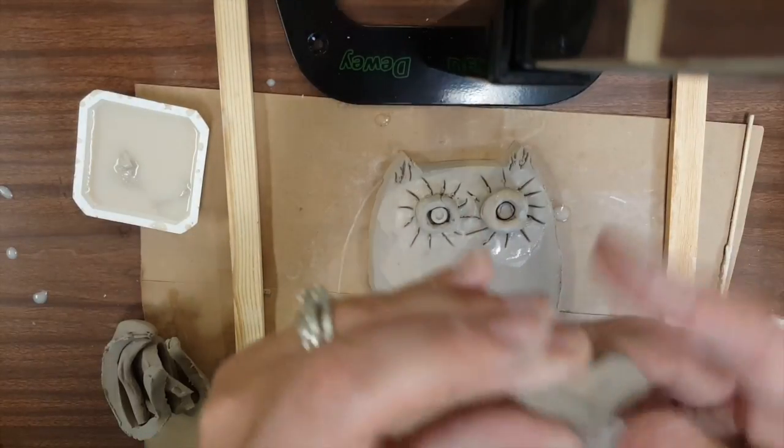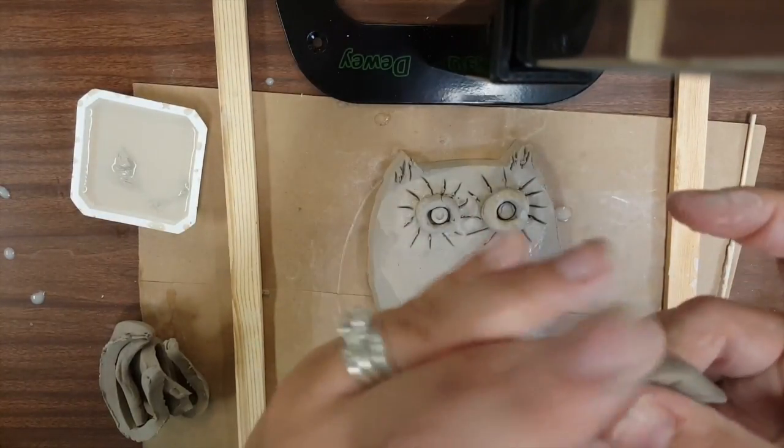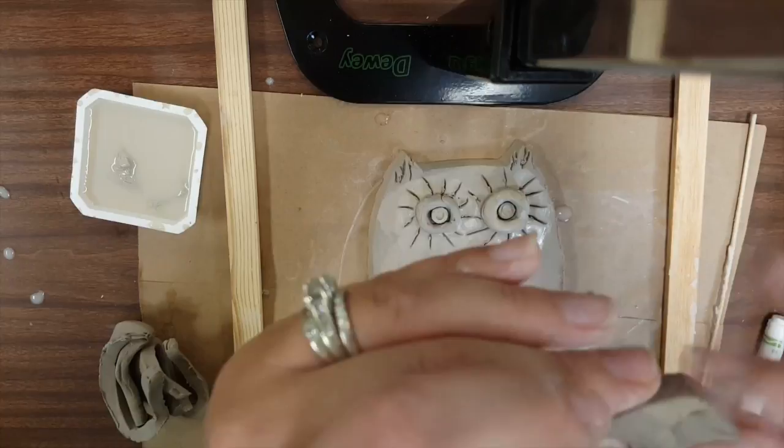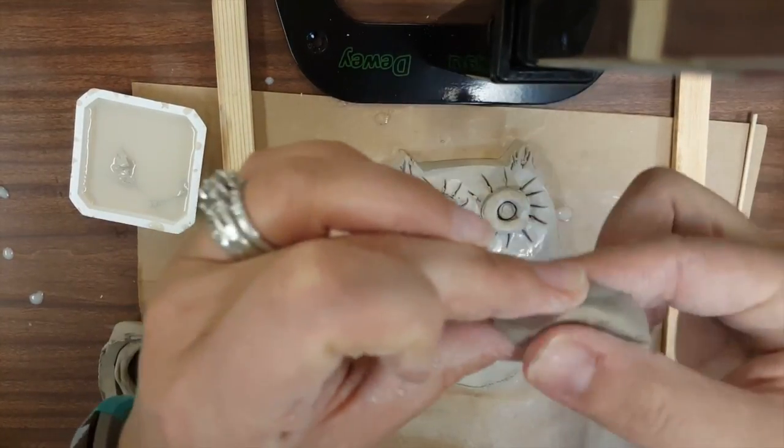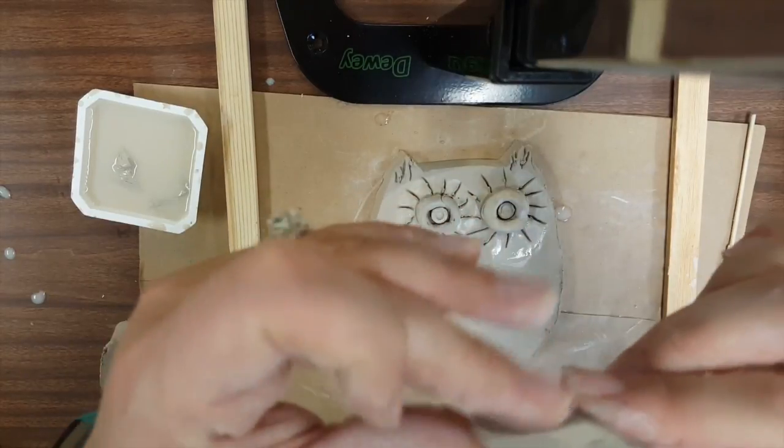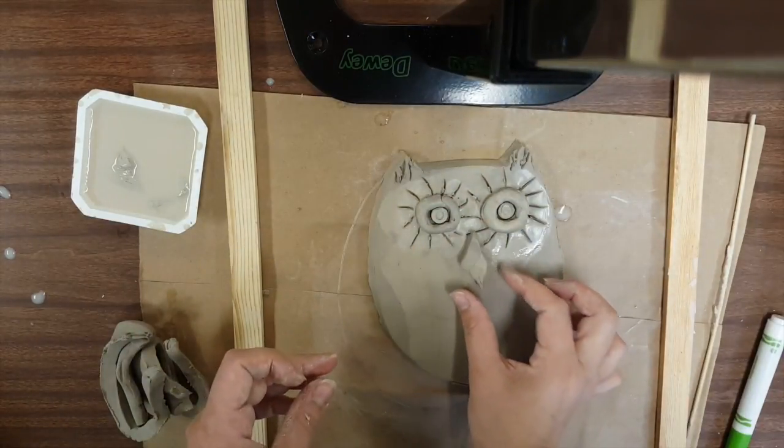So for the owl's beak, again you can draw things, you can press them in, or you can sculpt a shape and put it on. So here I'm sculpting a diamond beak. Diamonds and triangles are always good shapes for owls.